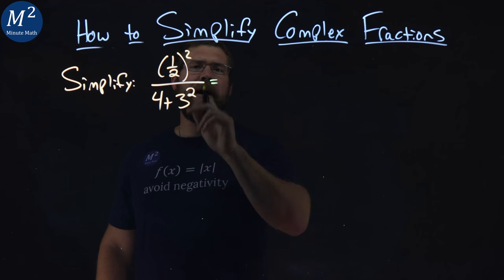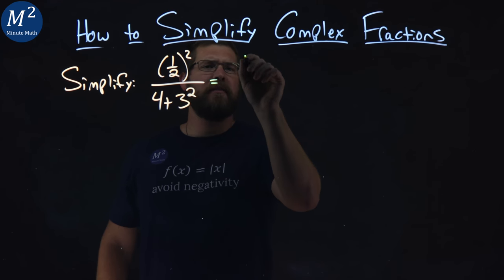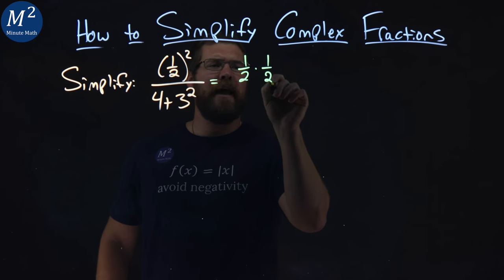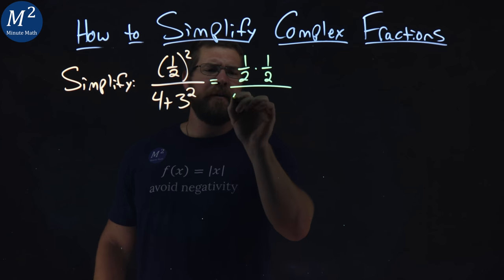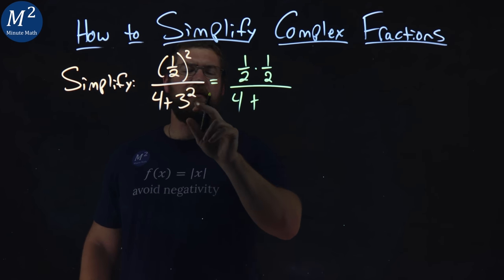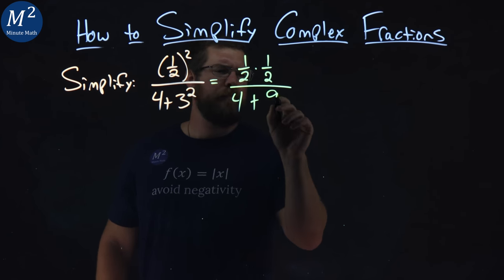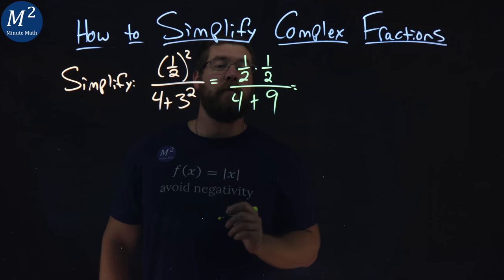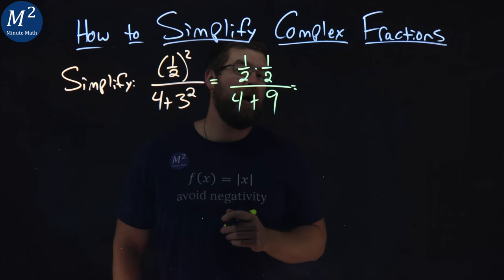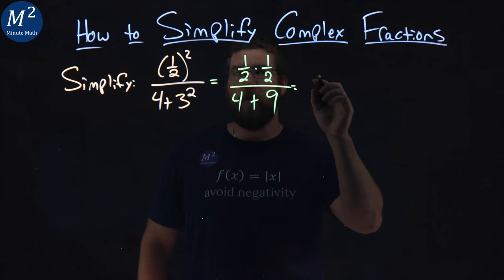Okay, so one half squared. Well, one half squared is one half times one half. Denominator, four plus, well, three squared, that's nine. Not too bad. From there, one half times one half is one fourth.